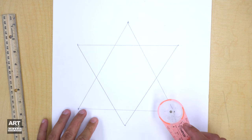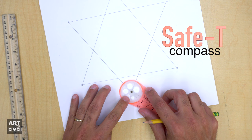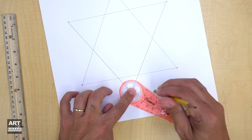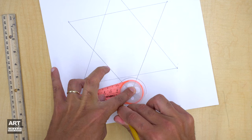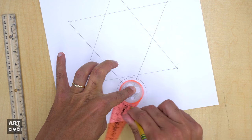Now this is what we call a safety compass. It's going to help us make the circles all around the corners. Hold the middle, pick a size, and spin. There we go.